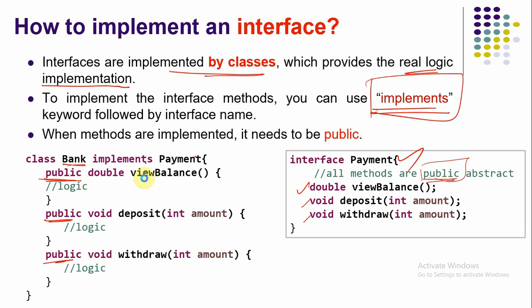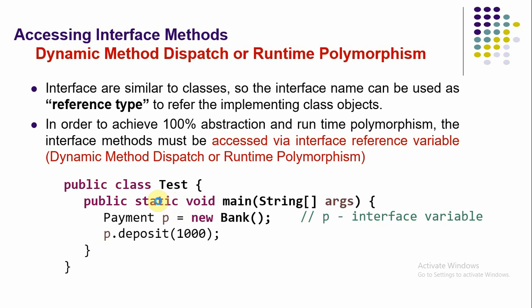The default access level is less than public, so you must make the methods public. You must also write the complete logic inside every function — this is mandatory. After implementation, to call these functions we use the dynamic method dispatch approach, which is also called runtime polymorphism.